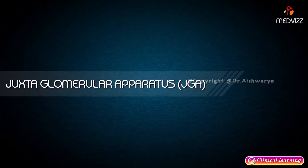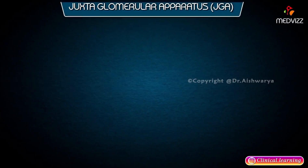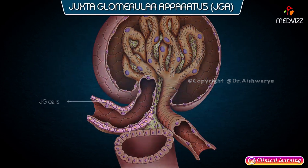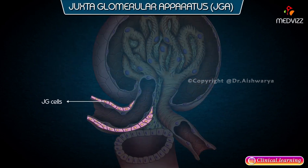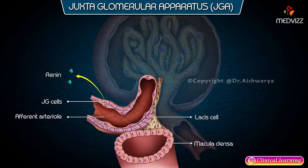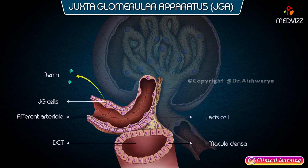The juxtaglomerular apparatus is formed by juxtaglomerular (JG) cells, which secrete renin and are present in the efferent arterioles; the lasses cells, or mesangium; and the macula densa of the distal convoluted tubule.